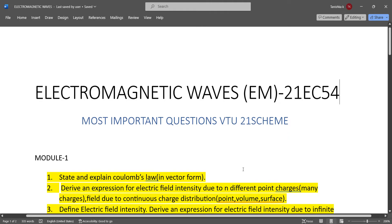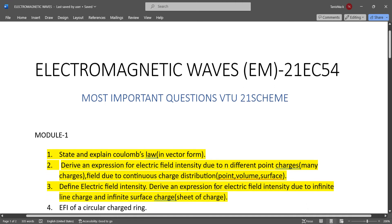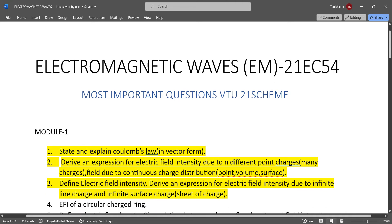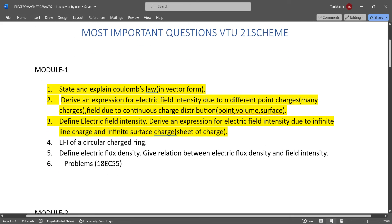Module 1 important questions are: State and explain Coulomb's law in vector form. Derive an expression for electric field intensity due to n different point charges (many charges), and field due to continuous charge distribution - point charges, volume charge distribution, and surface charge distribution. Define electric field intensity and derive an expression for electric field intensity due to infinite line charge and infinite surface charge (sheet of charge).